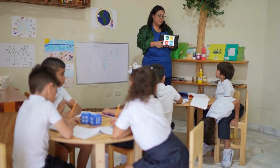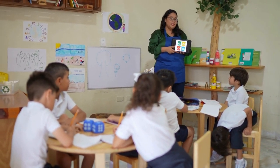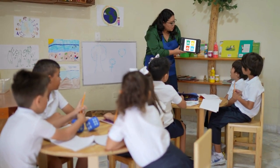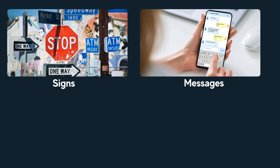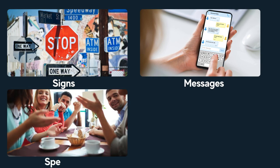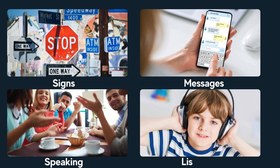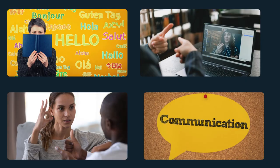As humans, we use language as a way to communicate by transmitting and receiving information. We communicate in many different ways, including through reading such as news articles and sign boards, writing text messages, speaking to a friend or a personal assistant, and listening to songs and presenters. We can communicate even in multiple languages and sign languages.